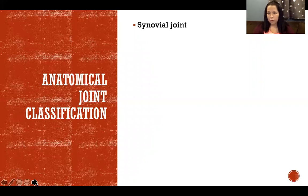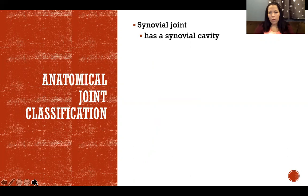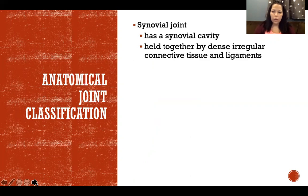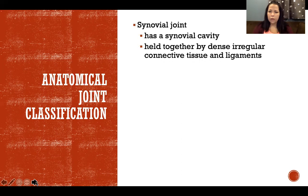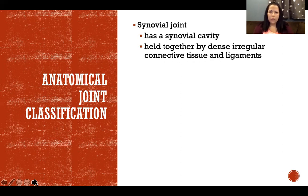The first anatomical classification is synovial joints. All synovial joints have synovial cavities — if there is no synovial cavity, it is not a synovial joint. Synovial joints are also held together by dense irregular connective tissue and ligaments. Dense connective tissue refers to tissue densely packed with collagen, which is a very strong, thick, rope-like protein that gives bones flexibility and durability.